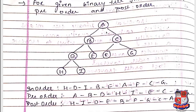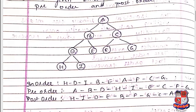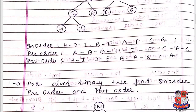For post-order (left, right, root): B is left of A, D is left of B, H is left of D — so H is first. Then right node I, then root D. Continue with left subtree: then E, then B. For right subtree of A: left child F, then right G, then root C. Finally root A. Post-order: H, I, D, E, B, F, G, C, A.